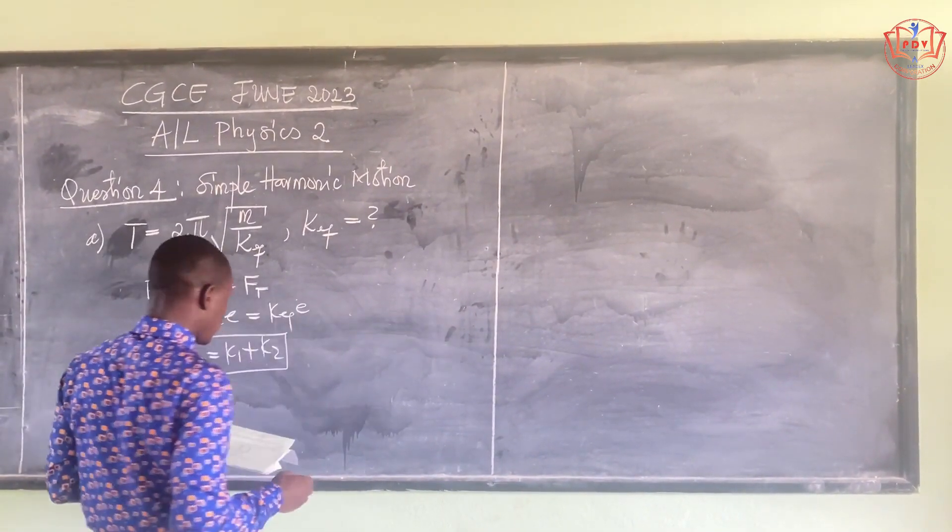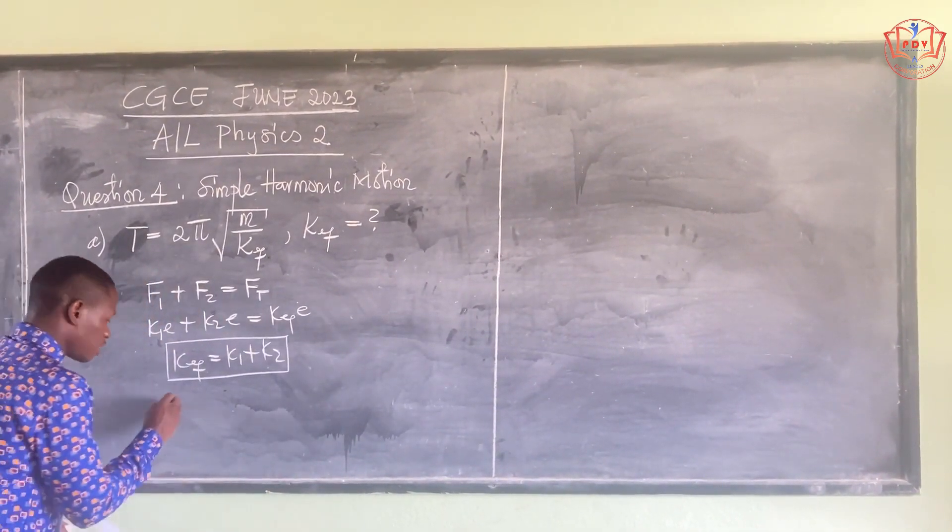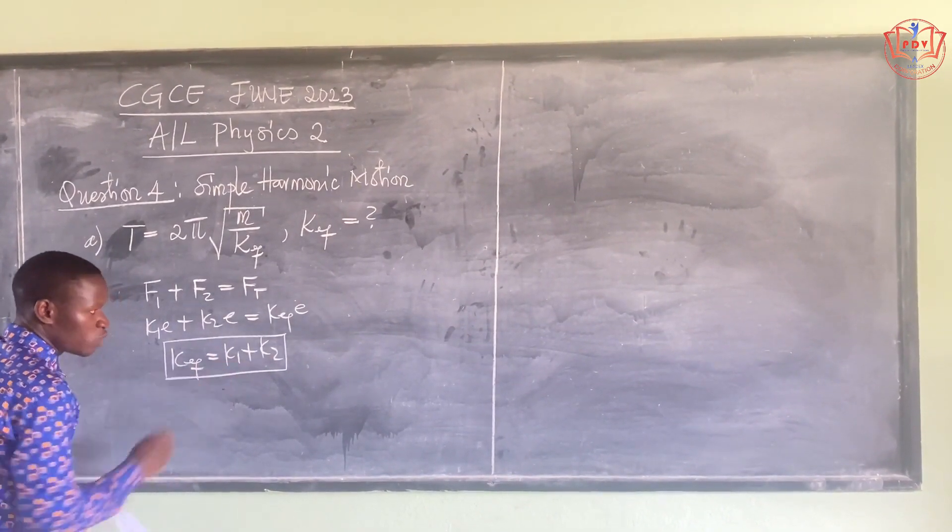But what is k1? k1 for Hooke's law is f/e, where f is mg divided by the extension.